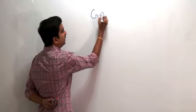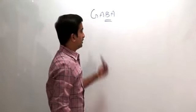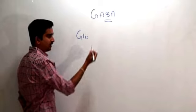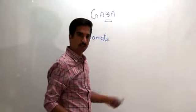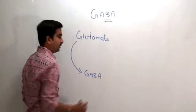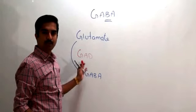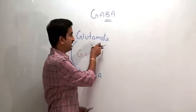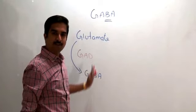GABA is known as gamma-aminobutyric acid. It is synthesized from the amino acid glutamate. Glutamate is converted into GABA by the enzyme GAD, which stands for glutamic acid decarboxylase. Therefore, glutamate is required for the synthesis of GABA.